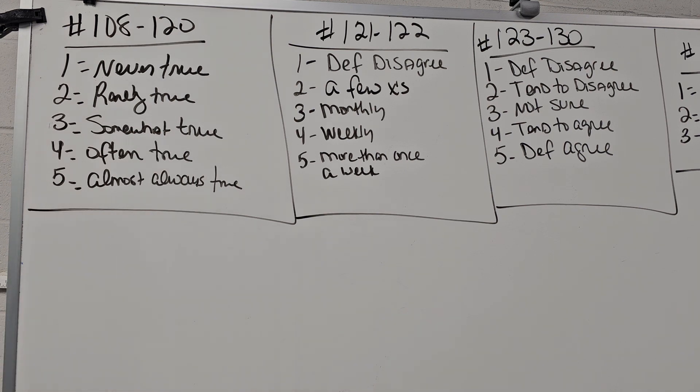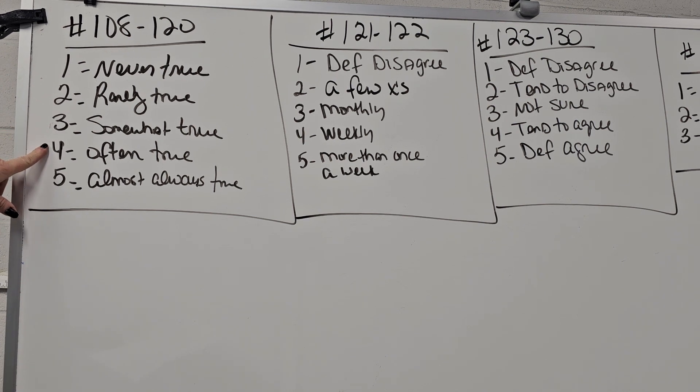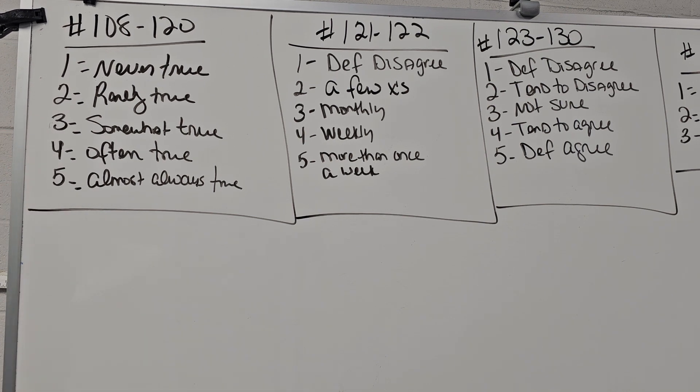Picking it up at number 108 through 120. One is never true, two is rarely true, three is somewhat true, four is often true, and five is almost always true. When I wait I feel God's presence in my relationships with other people. 109 I treat people of the other gender in a pure and holy manner. 110 when convicted of sin in my life I readily confess it to God as sin. 111 through prayer I seek to discern God's will for my life.